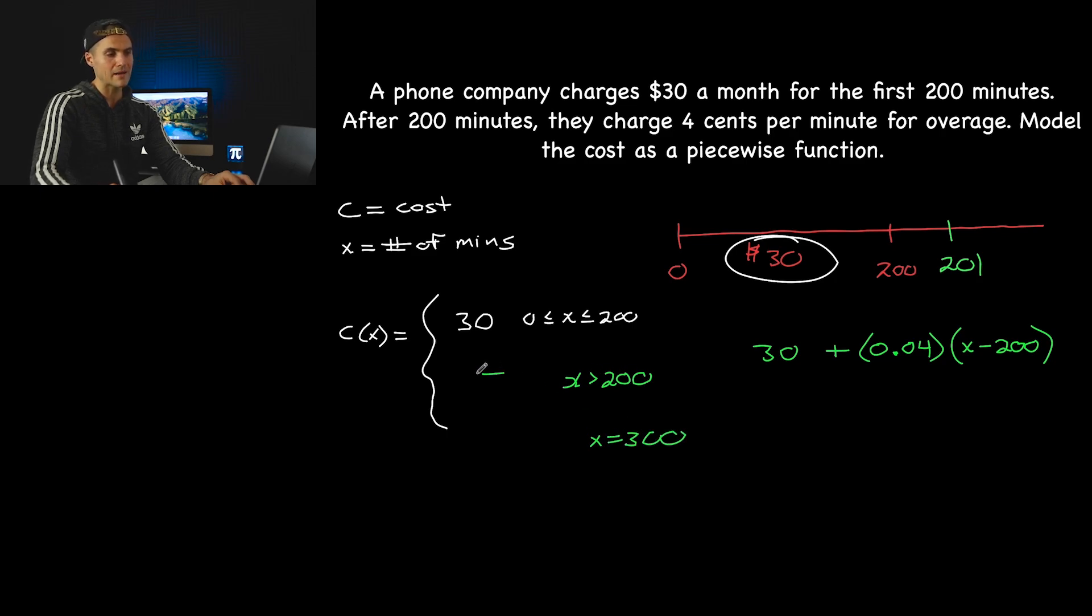Then we're automatically going to look at this equation here. We're not going to look at this because this 300 doesn't fall in this domain. It falls in this domain. And so if we know that we're making an equation, we're making an equation for X values greater than 200. That's a known fact that X is greater than 200. Well, if you want to get the number of overage minutes, it's just going to be whatever that X value is. Let's take that example of 300 minus the 200.